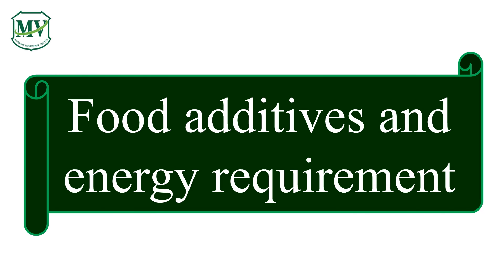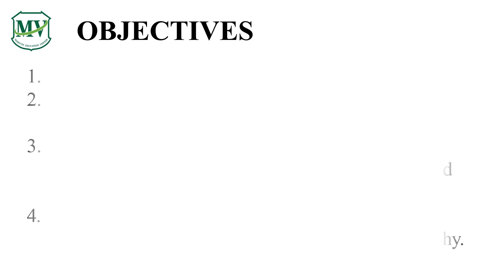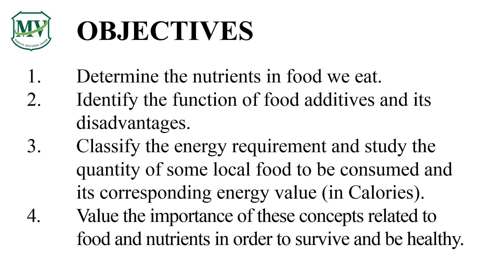Now, fasten your seatbelts, class, as we continue to explore the world of nutrients. Today's lesson is a continuation of our discussion last time about the six types of nutrients. You have learned in our previous lesson that we need nutrients from the food we eat in order for us to grow and be healthy. You are going to determine the nutrients in food we eat, identify the function of food additives and its disadvantages, classify the energy requirement, and study the quantity of some local food to be consumed and its corresponding energy value in calories. And lastly, value the importance of these concepts related to food and nutrients in order to survive and be healthy.